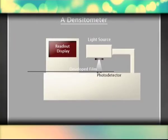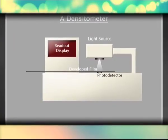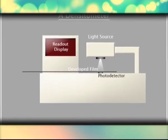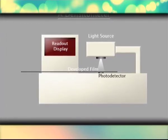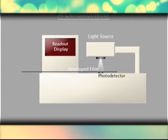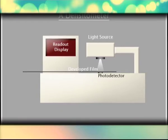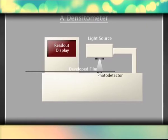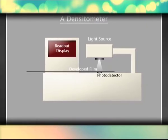Measurement: The density of film is measured with a densitometer. A light source passes a small beam of light through the film area to be measured; on the other side, a light sensor (photocell) converts the penetrated light into an electrical signal. A special circuit performs a logarithmic conversion on the signal and displays the results in density units. The primary use of densitometers in a clinical facility is to monitor the performance of film processors.